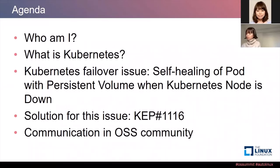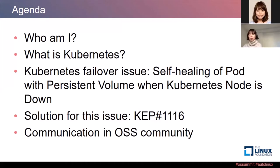Here is today's agenda. First, I will talk about the Kubernetes failover issue and explain what is happening when we use Kubernetes in production. I will also talk about the solution for this issue, which is currently discussed in the Kubernetes community. Finally, I will talk about development status in the Kubernetes community and communication in open source community — how we can manage to progress with development.